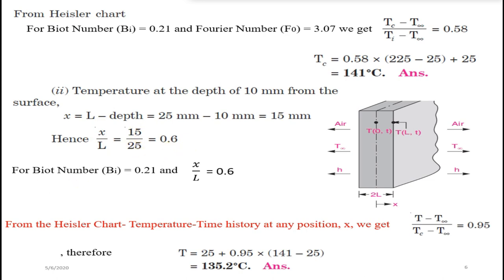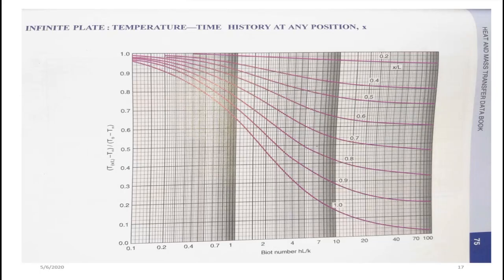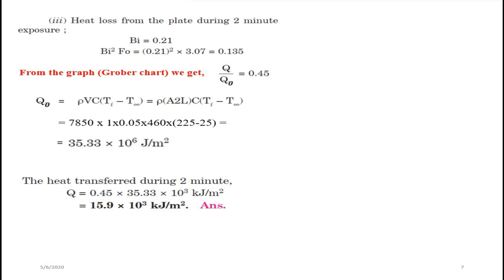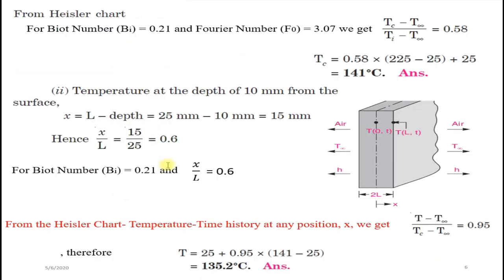For Biot number 0.21 and x/L = 0.6, going to graph number 2 for the infinite plate, we read the y-axis as: (T − T∞)/(Tc − T∞) = 0.95.